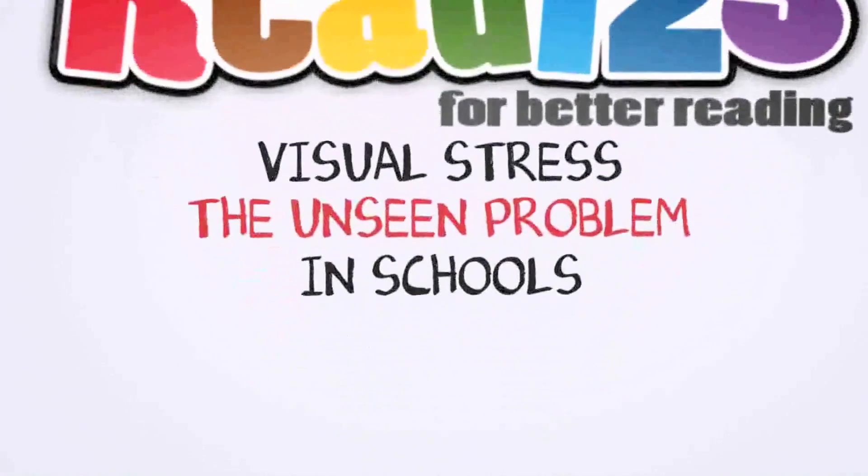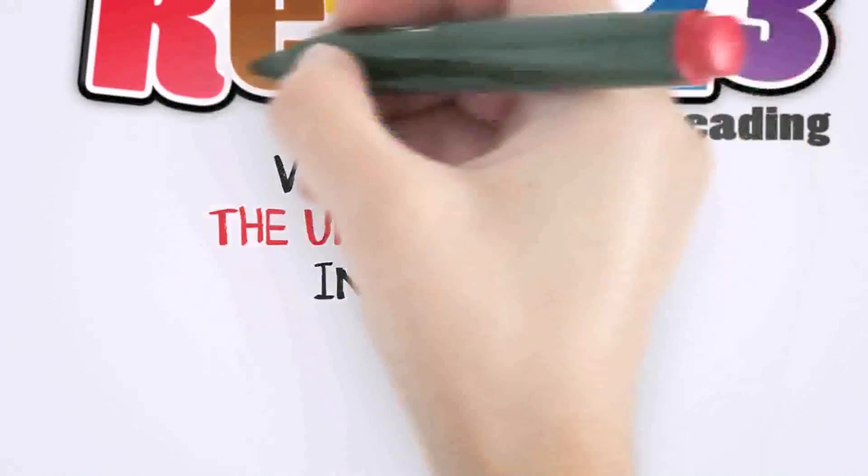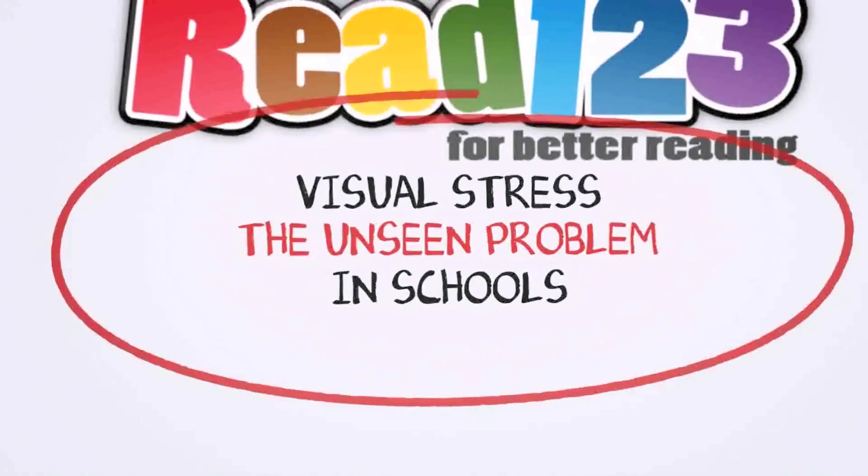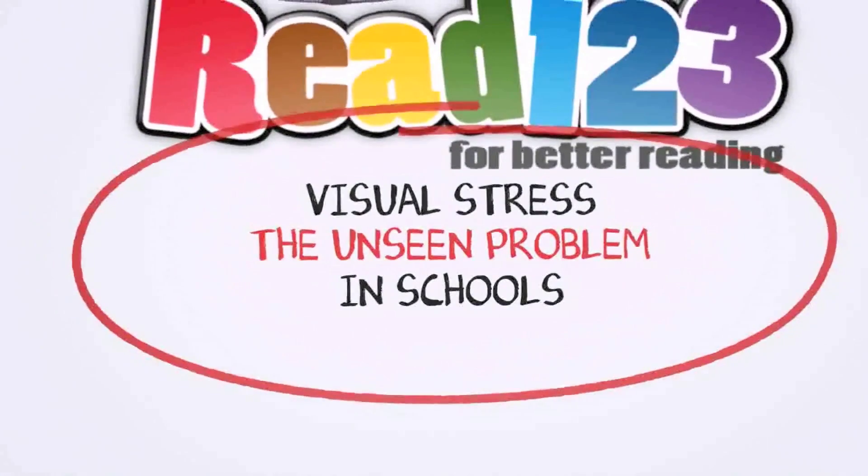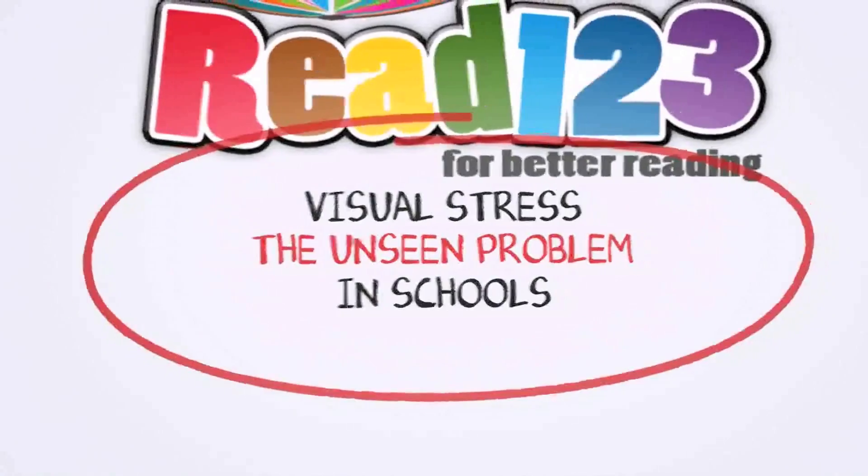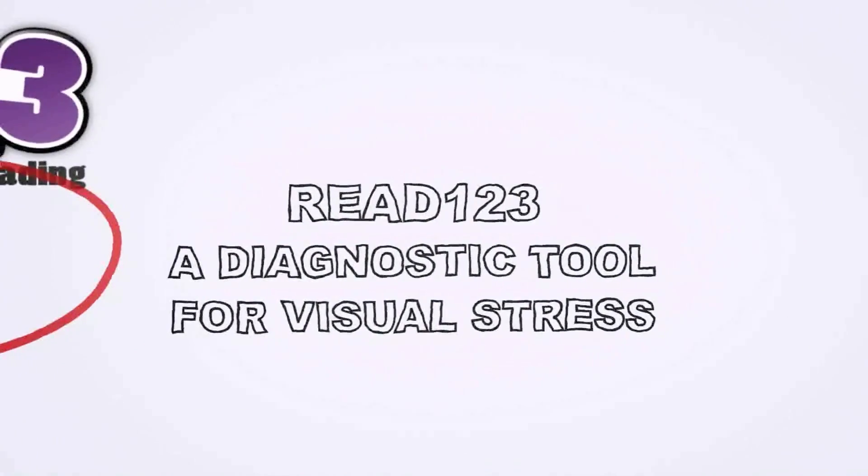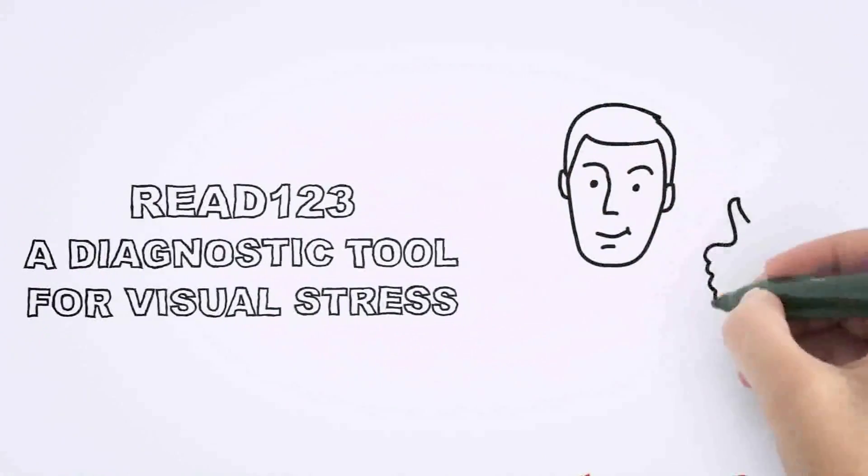Read123 is an online diagnostic tool that identifies pupils whose reading can be helped by a simple color overlay. It's the first application of its kind which easily screens for visual stress and automatically provides a simple solution.